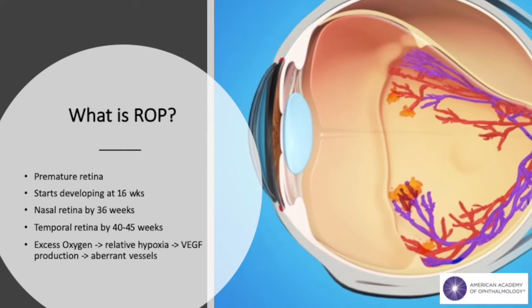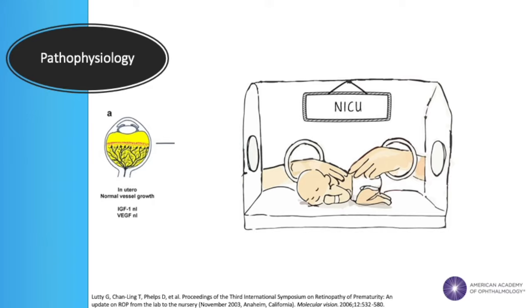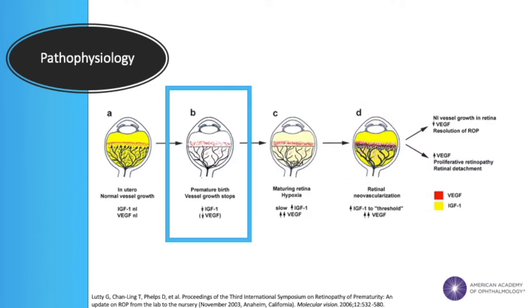The normal retina begins developing during the second trimester. However, it continues to develop even after a full-term birth at 37 to 40 weeks gestation. Like the eyes, the lungs also finish developing late. Naturally, the first instinct would be to give premature babies oxygen to compensate for their less effective lungs. And indeed, interventions like these have been critical to lowering infant mortality among premature neonates. But herein lies the trouble: the developing retina is exquisitely sensitive to oxygen levels. Upon sensing higher concentrations of oxygen, the retina deduces it doesn't need any more blood vessels and shuts off vessel growth.